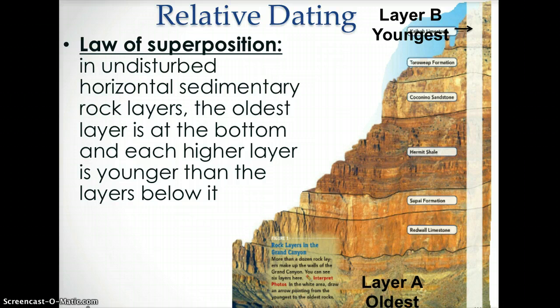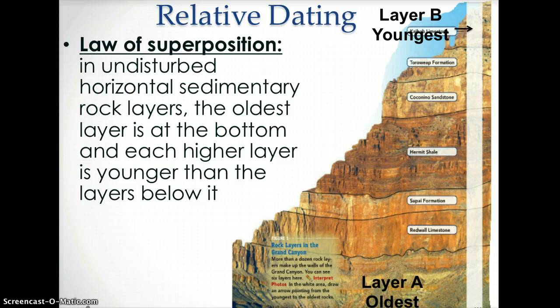The law of superposition is used to get the relative age of rock. The law of superposition states that in undisturbed horizontal sedimentary rock layers, the oldest layer is at the bottom, and each higher layer is younger than the layers below it. For example, in this image, layer A is the oldest and layer B is the youngest.